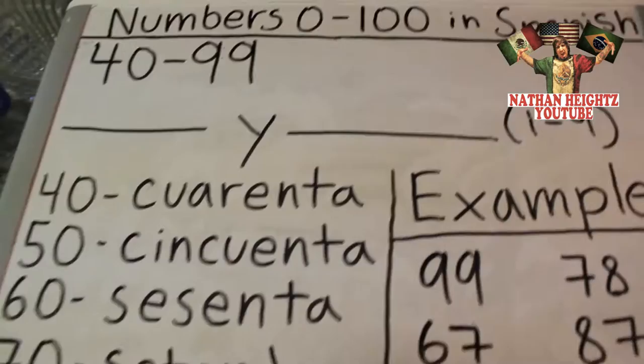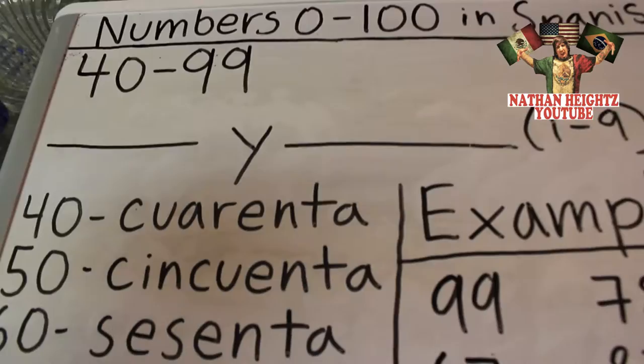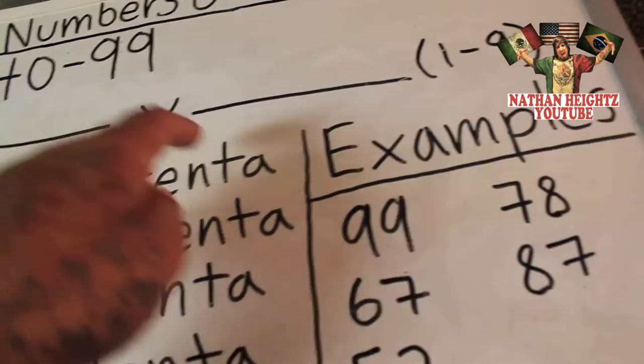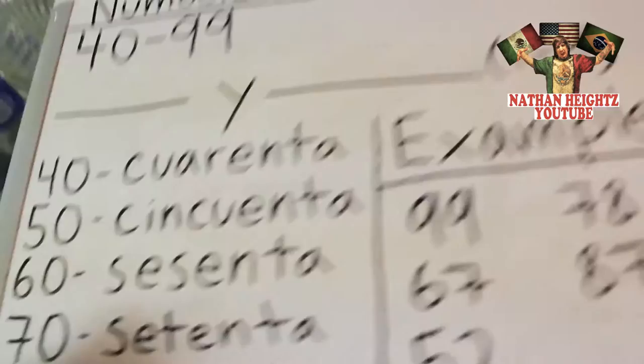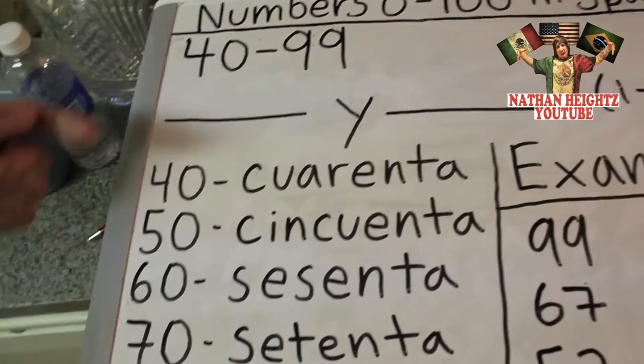Now we have numbers 40 through 99, and here's where it gets really simple. For the rest of these numbers we follow this formula: a tens number + y + another number, y being 'and' remember? The second number will be 1 through 9. So here we have 40, 50, 60, 70, 80, 90 — one of these goes into the first slot, and numbers 1 through 9 go into the second slot.